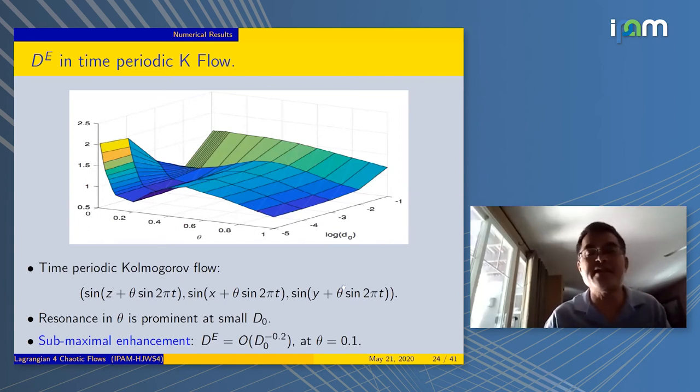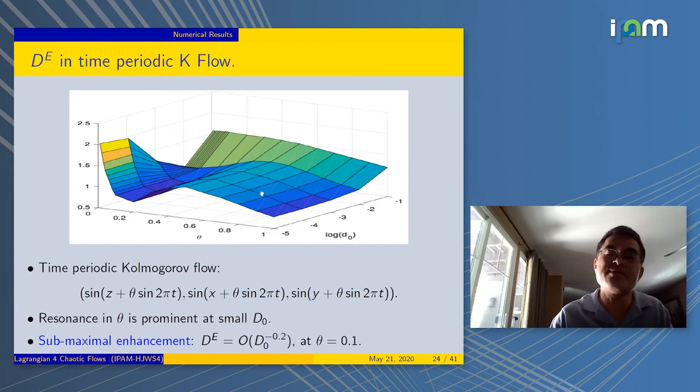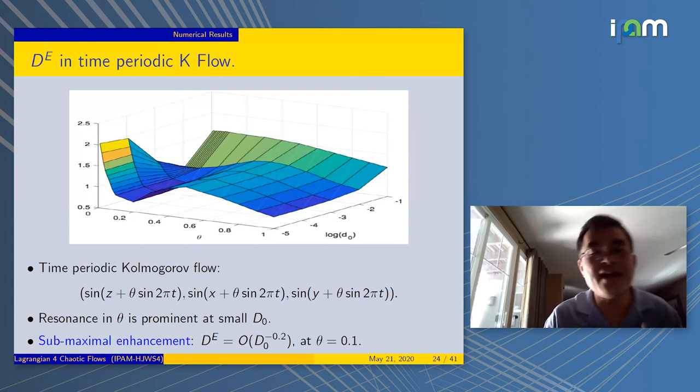Let's go on to the time-dependent Kolmogorov flow. In this case, we could draw a plot. Here's the D_0. As D_0 goes to zero, you can see the other coordinate is θ. We started to see that there is enhancement, but it doesn't go to zero. It actually follows some submaximal law. You can extract some numbers. You also see a resonance phenomenon. It's not a flat surface. There's a peak structure, in particular as D_0 gets small.